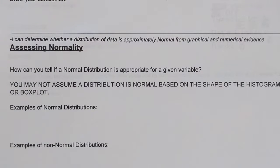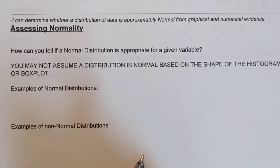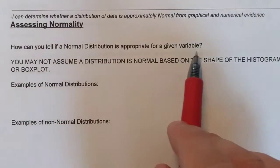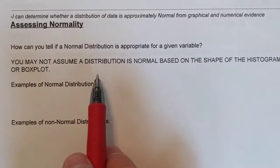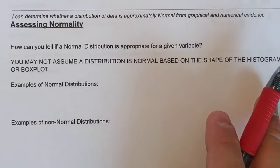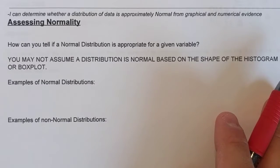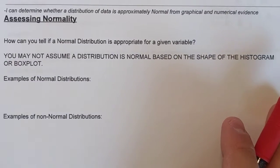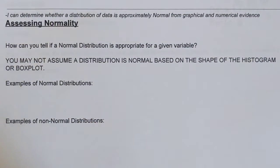And the second way is we create a normal probability plot and see if it's linear or not. So first, how can we tell if a normal distribution is appropriate for a given variable? One thing you cannot do is assume that it's normal based on the shape of the histogram or box plot. It may look normal but you can only really tell by doing one of these two methods.